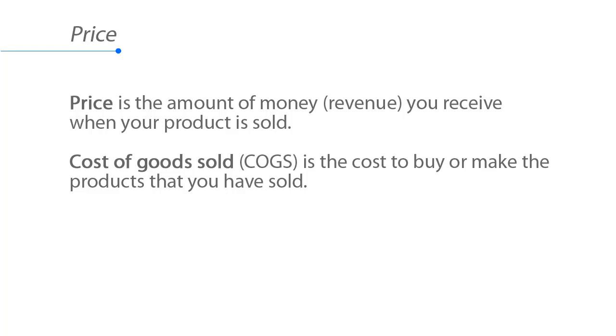Price is the amount of money, or revenue, you receive when your product is sold. Cost of goods sold, or COGS, is the cost to buy or make the products that you've sold.